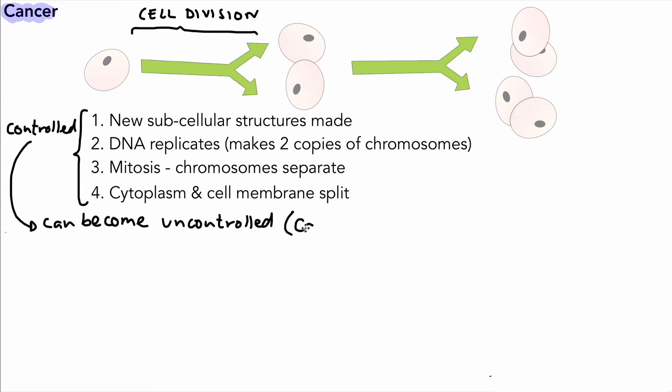And the reason it can become uncontrolled is because of something like carcinogens. We mentioned this in a previous video. These are chemicals that cause cancer. It could be because of lifestyle risks. For example, smoking, which contains chemicals that can cause cancer.